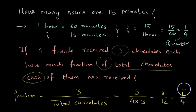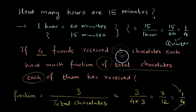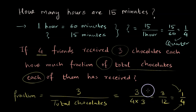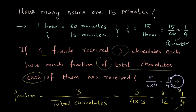So everybody got a quarter of the total chocolates, which makes sense since there were 4 friends each getting an equal share. Interestingly, the answer doesn't change if we use a different number of chocolates per person. If each friend got 5 chocolates, the fraction would be 5 over 20, which still gives 1/4. The numerator represents one friend and the denominator represents total friends — that's how we arrive at the answer.